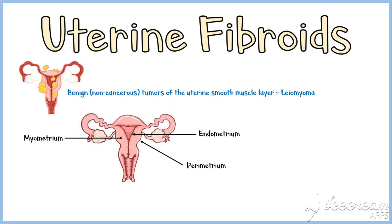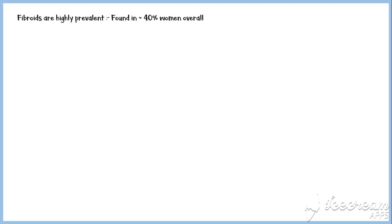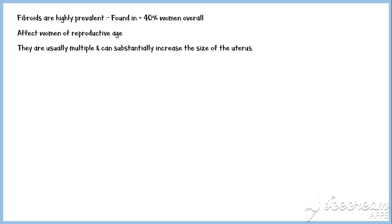Fibroids develop in the myometrial layer of the uterus. They are highly prevalent, found in approximately 40% of women overall. They affect women of reproductive age and are extremely uncommon before puberty. They are usually multiple and can substantially increase the size of the uterus. Fibroids are classified according to their location in relation to the myometrium.